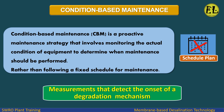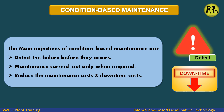Condition-Based Maintenance is a proactive maintenance strategy that involves monitoring the actual condition of equipment to determine when maintenance should be performed. Rather than following a fixed schedule for maintenance, it uses measurements that detect the onset of a degradation mechanism.